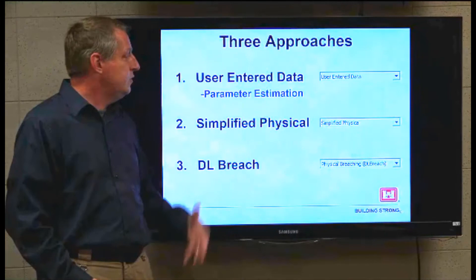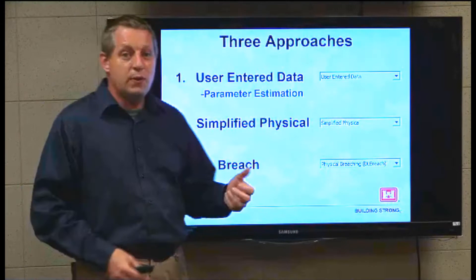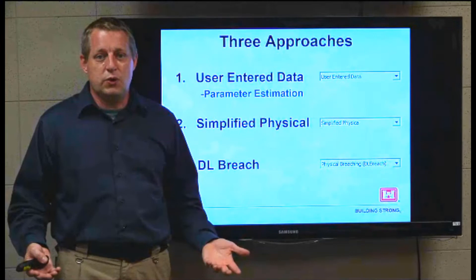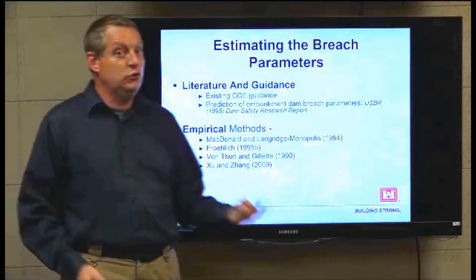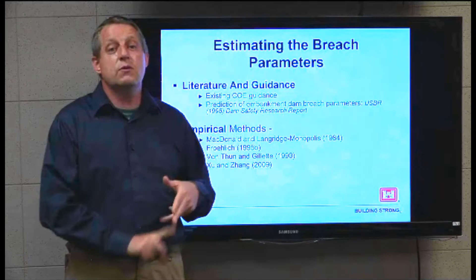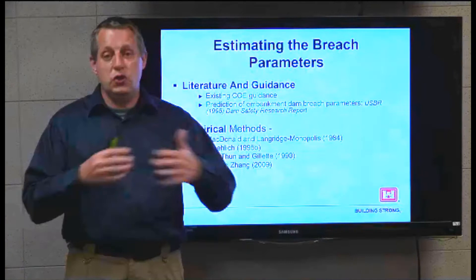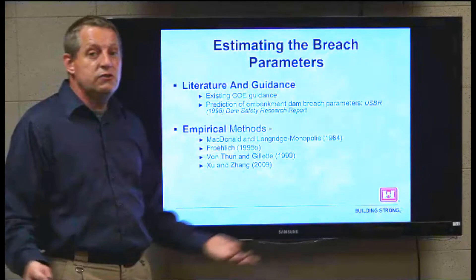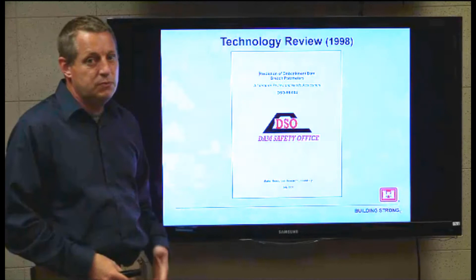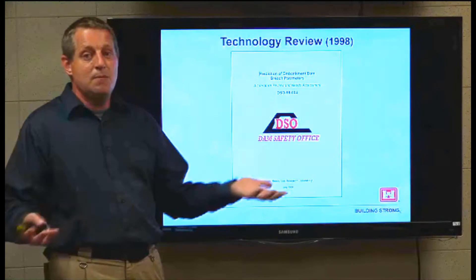So let's talk about user-entered data. If you're going to put in a width and a time to develop the failure, you want to estimate those parameters. There are basically two major ways: you can look at the literature and guidance, or you can run a suite of regression analyses. The standard guidance is the U.S. Bureau of Reclamation report from 1998, which looks at embankment parameters from a number of dam failures.